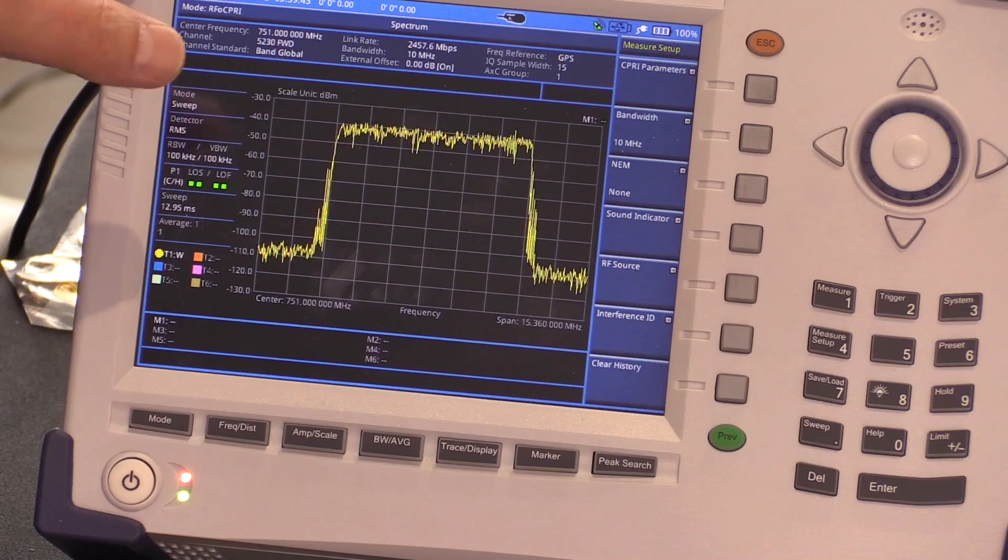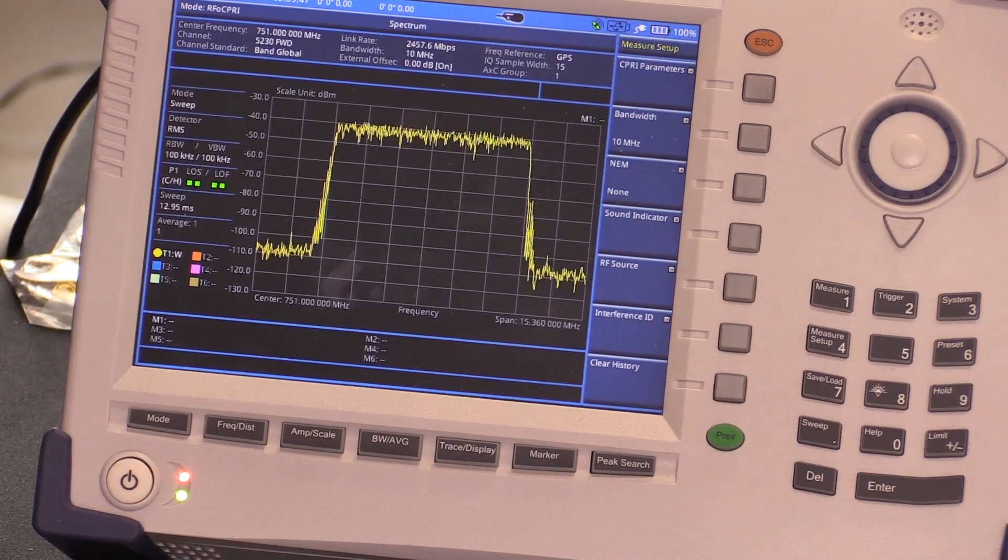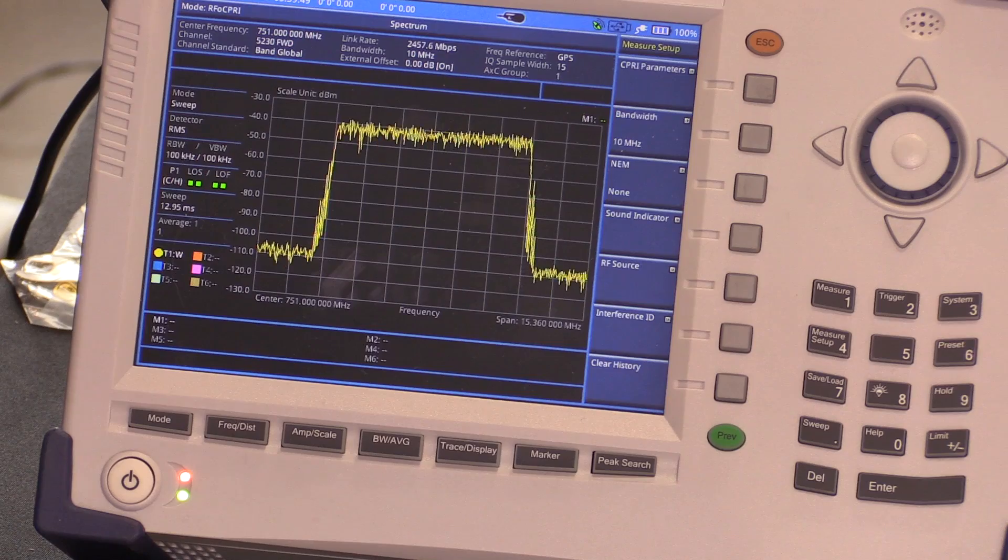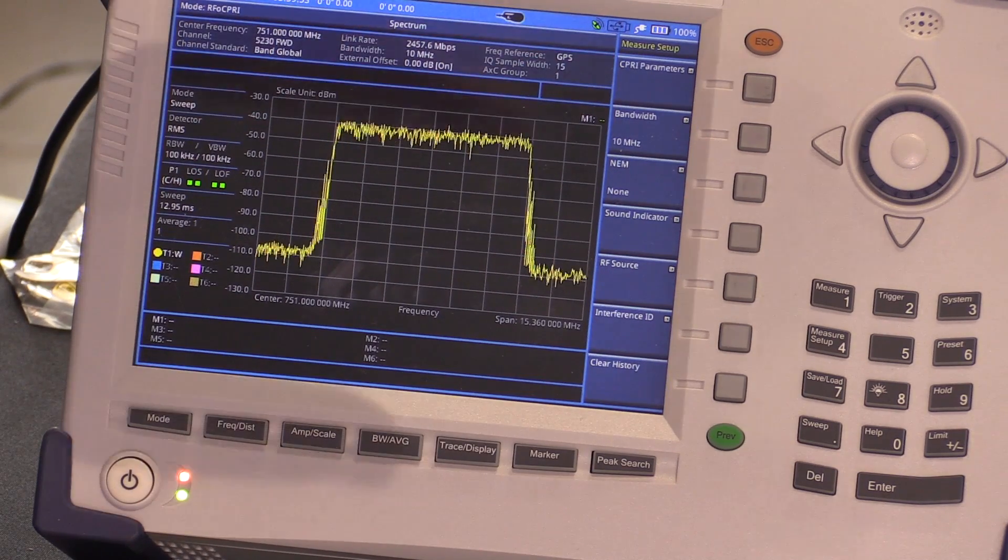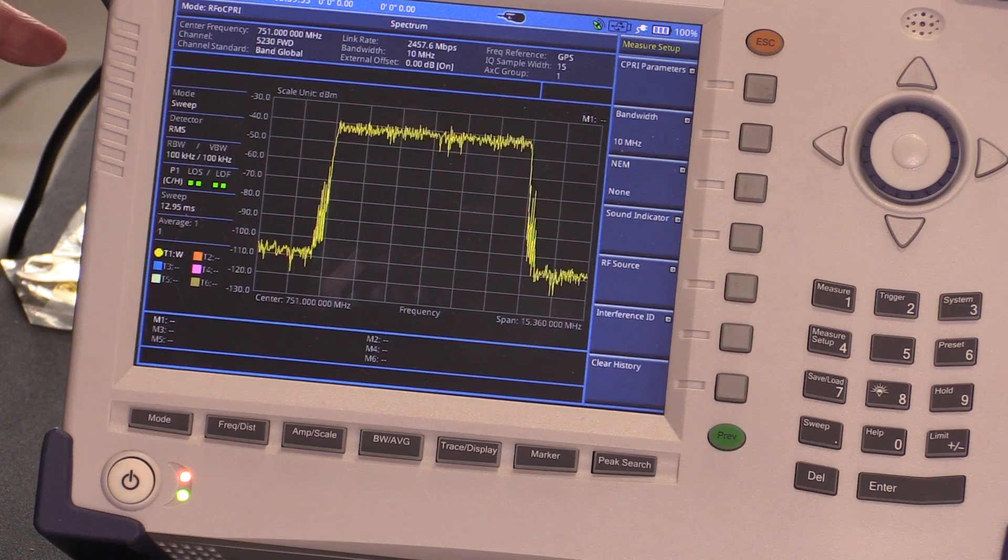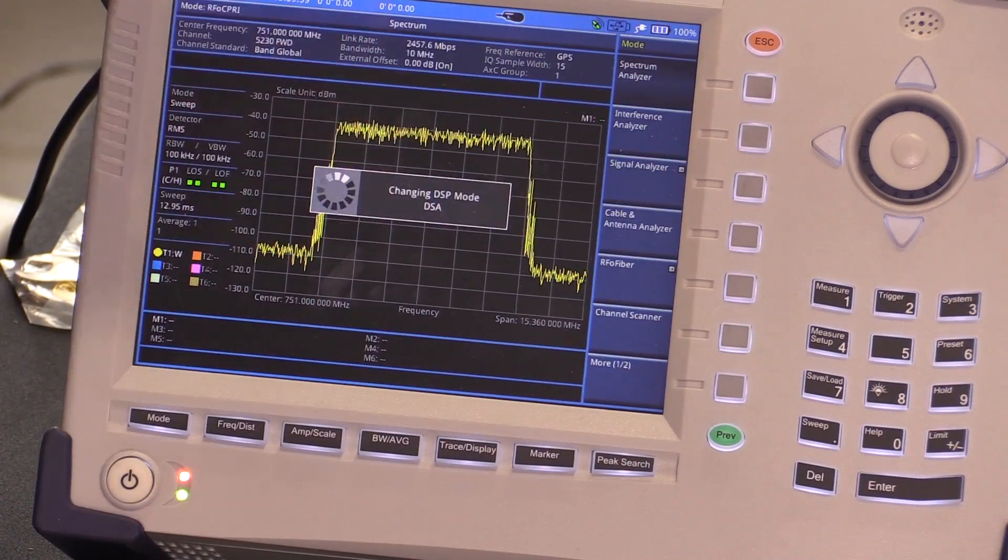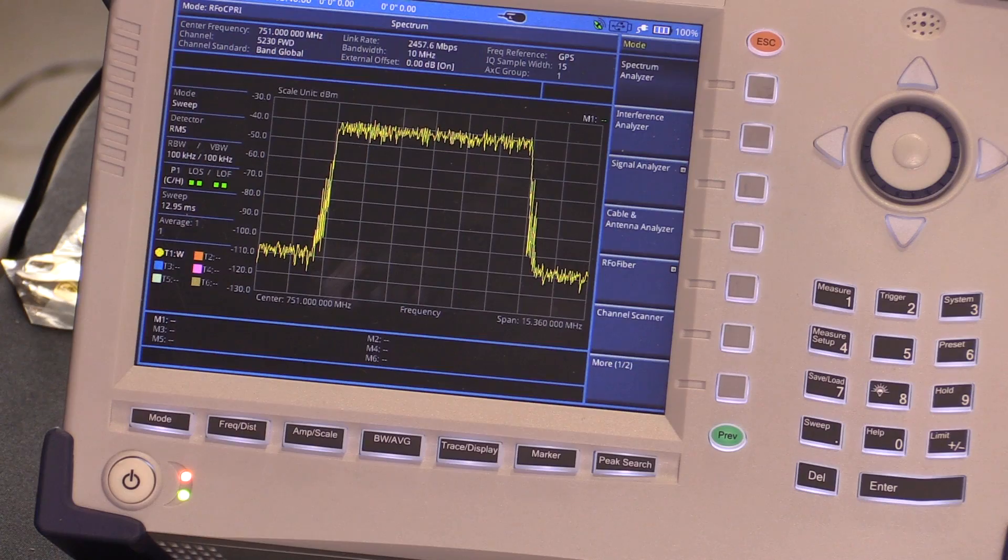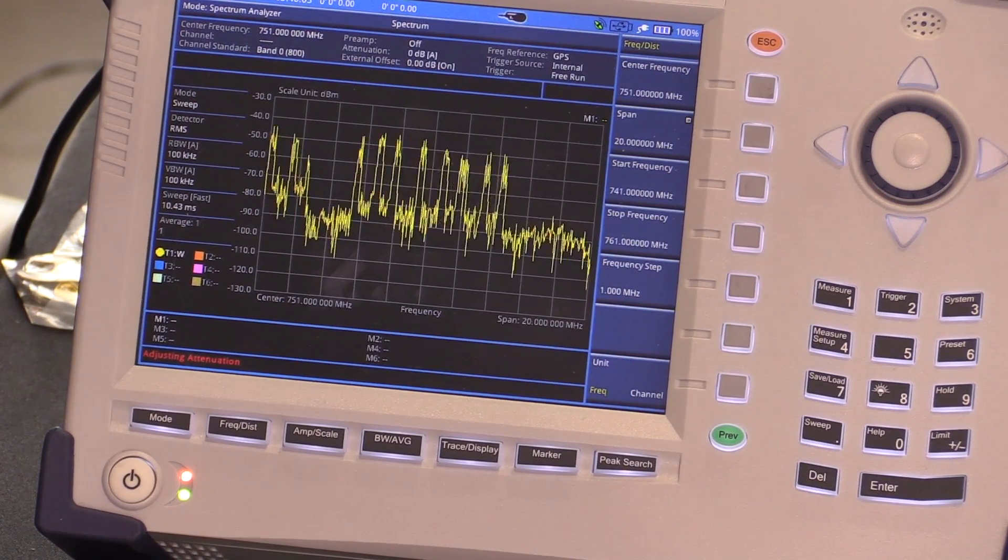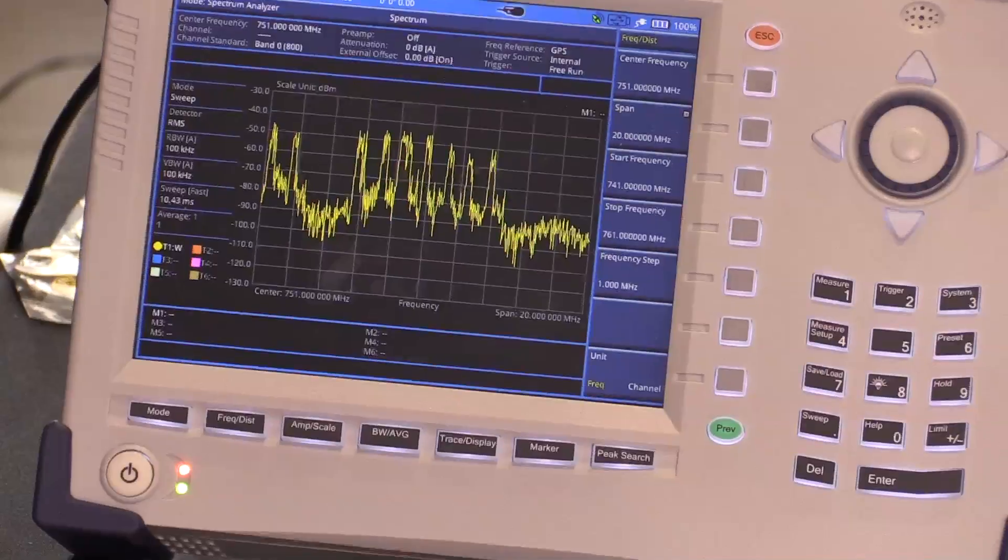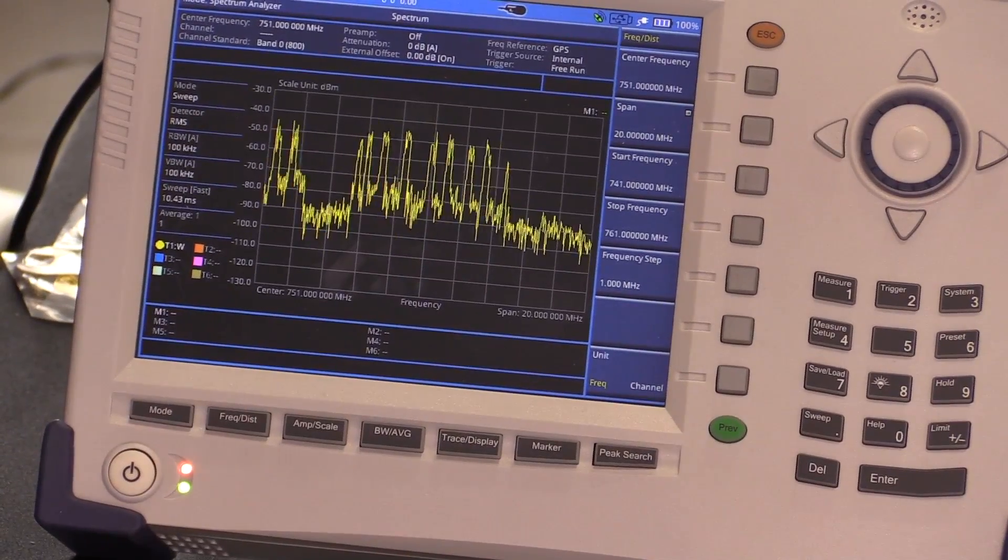This is a JDSU 785B base station analyzer, and it's really a mixture of a whole bunch of different instruments all in one package. We can look at spectrum, as well as do basic RF measurements for power, for interference hunting, all kinds of various RF applications.